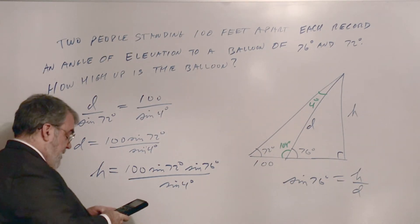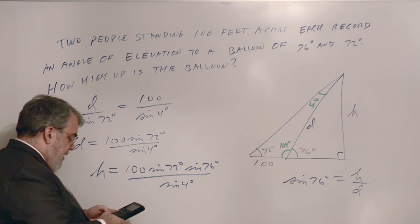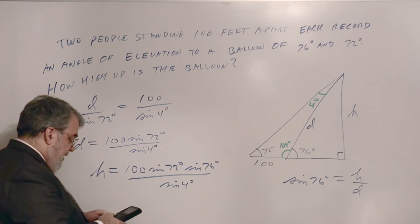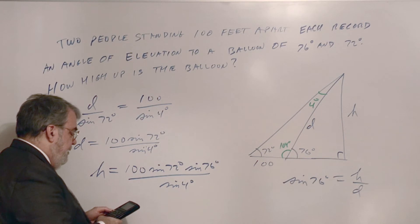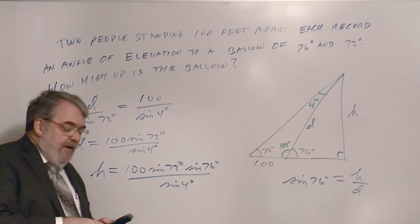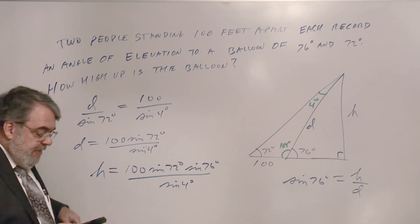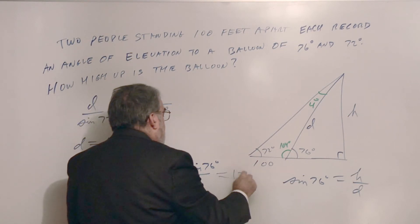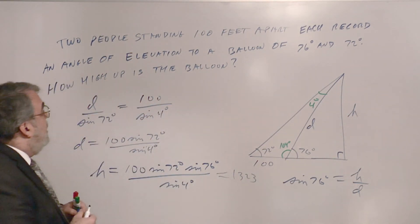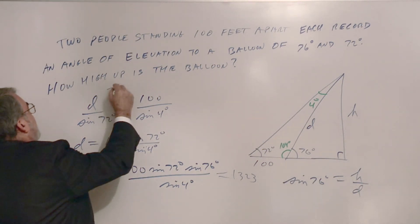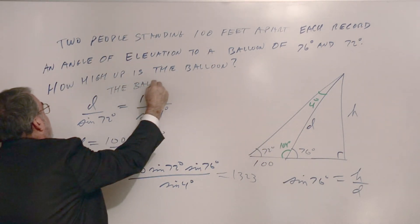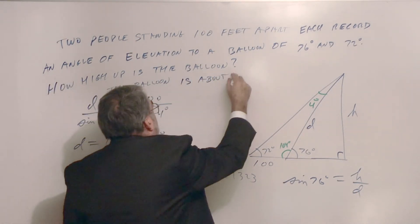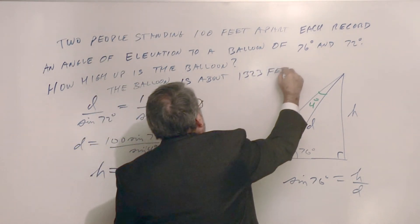Calculating: 100 sine 72 times sine 76, divided by sine 4, gives 1,323 feet, rounded to the nearest foot. The balloon is about 1,323 feet high.